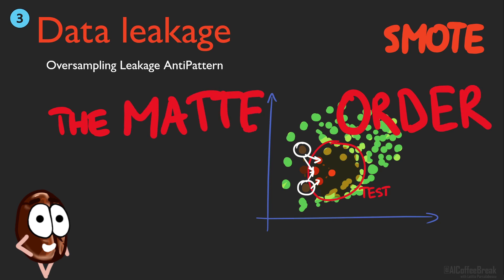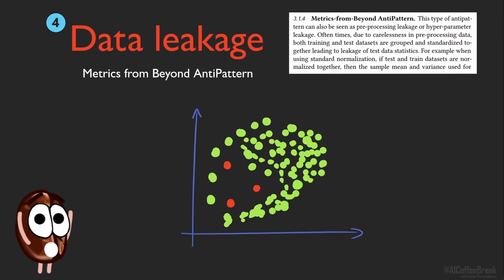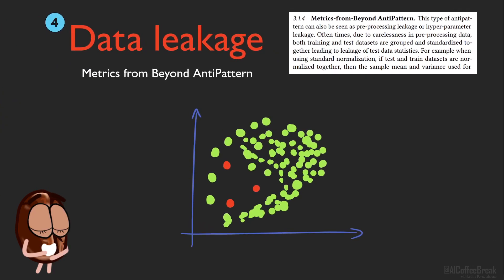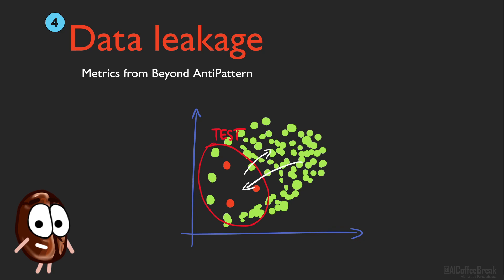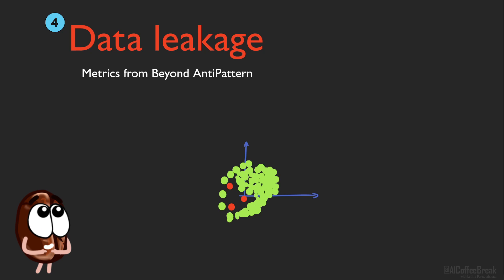The order of data pre-processing steps and splitting into train and test splits matters. The last mentioned anti-pattern responsible for data leakage is called 'metrics from beyond.' This is very similar to the oversampling strategy — it talks about other operations that, if performed before train-test splitting, could smear out information from one set to the other. One example could be data normalization by subtracting the mean and dividing by the variance. If we do this for train and test together, the normalization operation informs the future train set of the mean and variance of the whole set, including the test set, and vice versa.